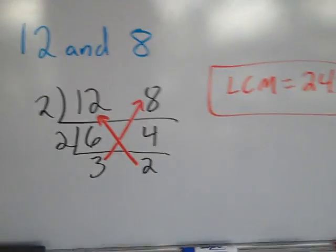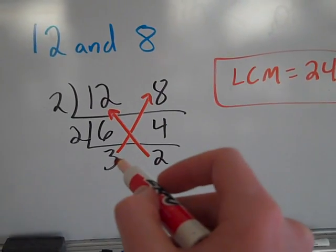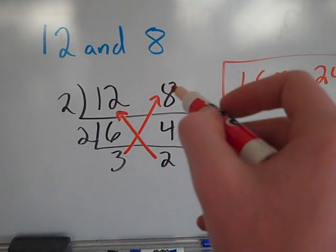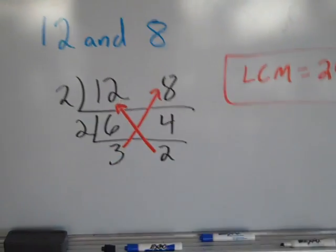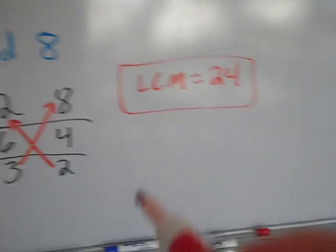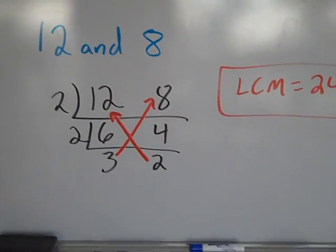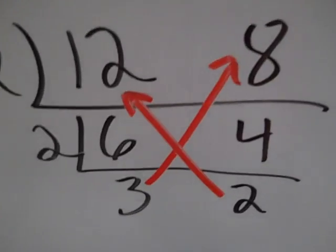So this is a new way to find LCM. Instead of listing multiples, you can just do your division ladder. Look at the bottom most term, multiply it times the top diagonal most term. Look at the bottom most term, multiply it times the top diagonal most term. Both 12 times 2 and 3 times 8 are both 24, which is the lowest common multiple of those two numbers. I'm going to take you through a couple other examples.